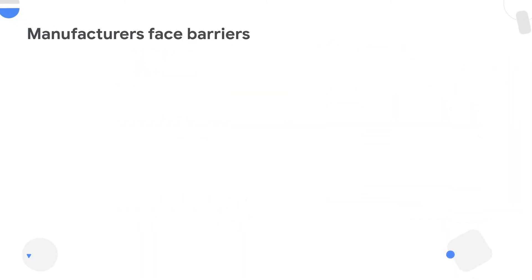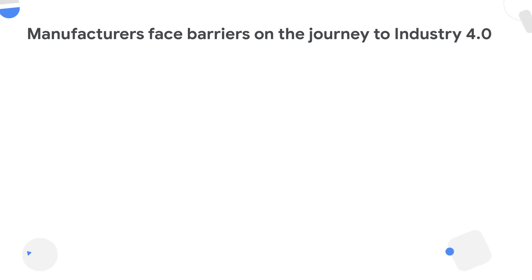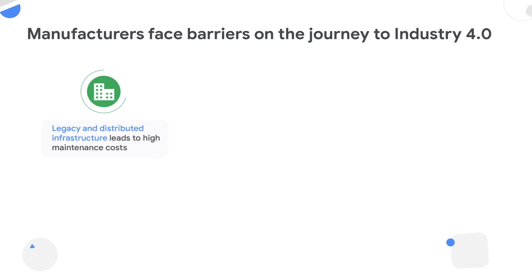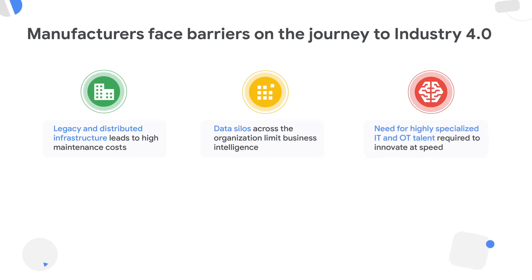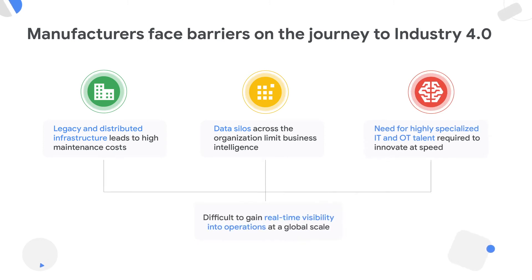Let's understand the barriers manufacturers face when embarking on an Industry 4.0 journey. It's primarily threefold: they have a lot of legacy and distributed infrastructure, which leads to high maintenance costs and IT technical debt. Then there are data silos — SAP data sitting in the enterprise alongside non-SAP data like IoT or operational data — making it difficult to draw insights. And let's not forget the need for IT and OT specialized talent, making it harder to gain real-time visibility into operations.